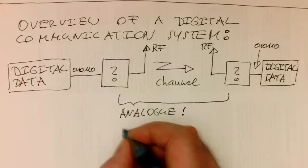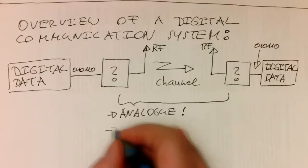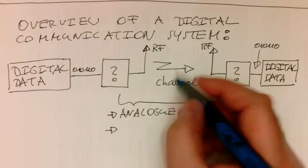And so this channel here needs to be, this is analog here. And also, this signal here is usually a band pass filtered signal.